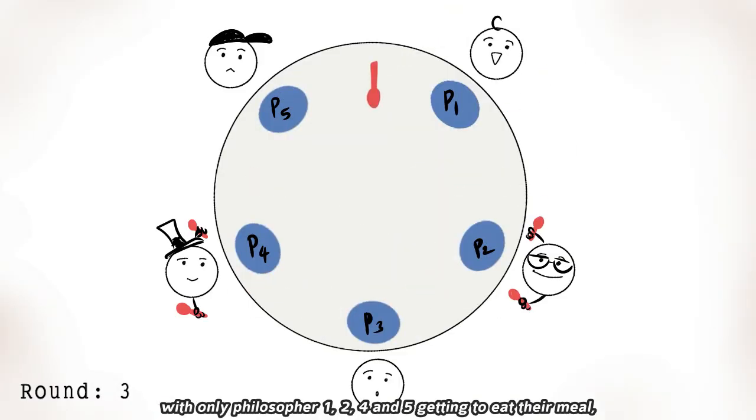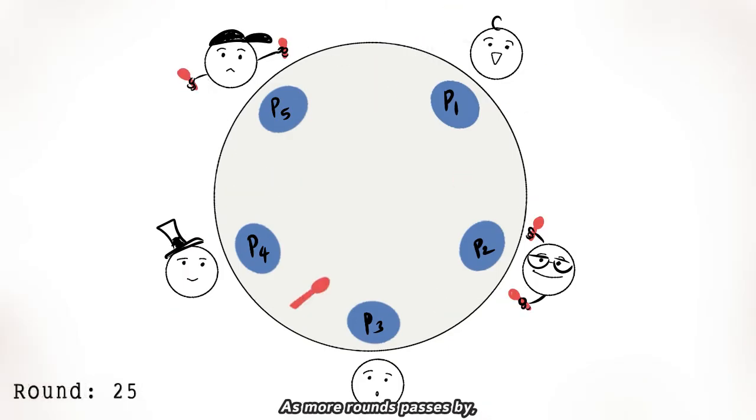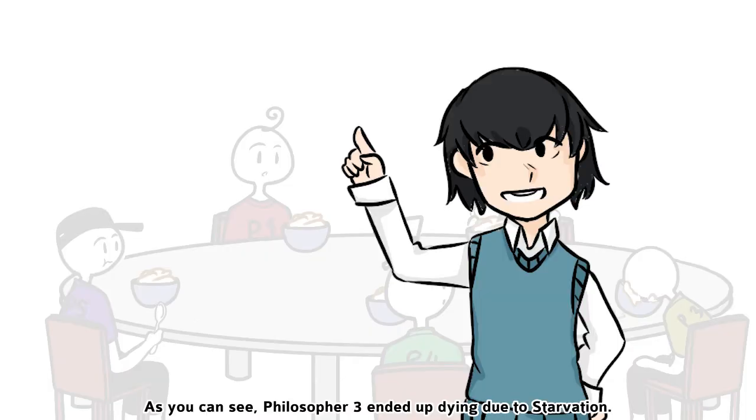As time goes by, if only Philosopher 1, 2, 4, and 5 can eat their meal, Philosopher 3 has been waiting the whole time. A small round passes by, Philosopher 3 end up dead. As you can see, Philosopher 3 ended up dying due to starvation.